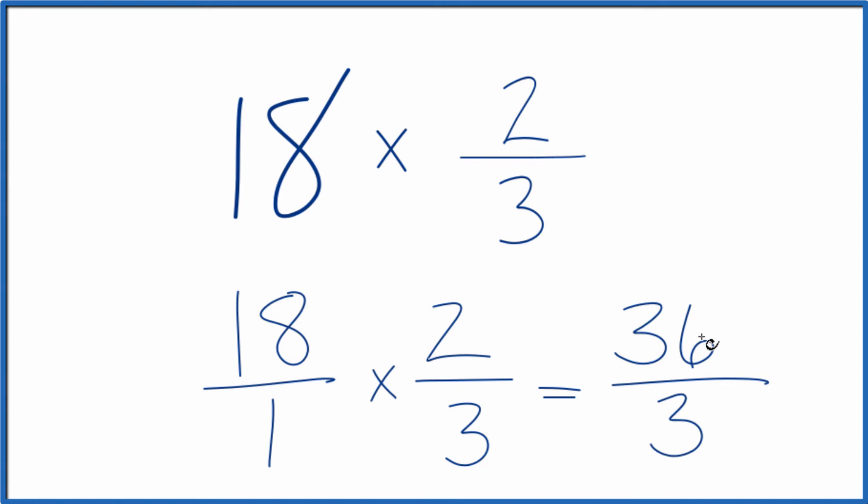So 18 times two-thirds, that equals 36 over 3. We can actually simplify this further.